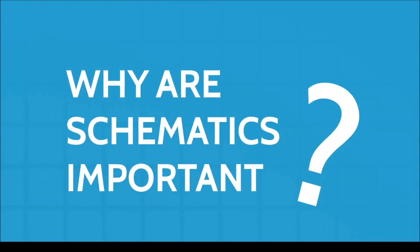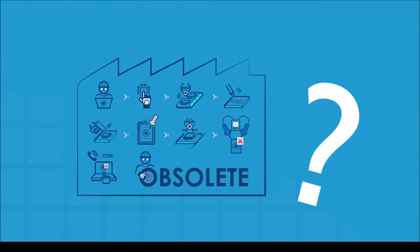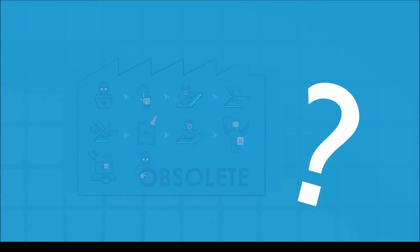Why are schematics important? Electronic circuits aimed at industrial use are designed to last many years. Unfortunately, however, many are quickly made obsolete by the original equipment manufacturer.